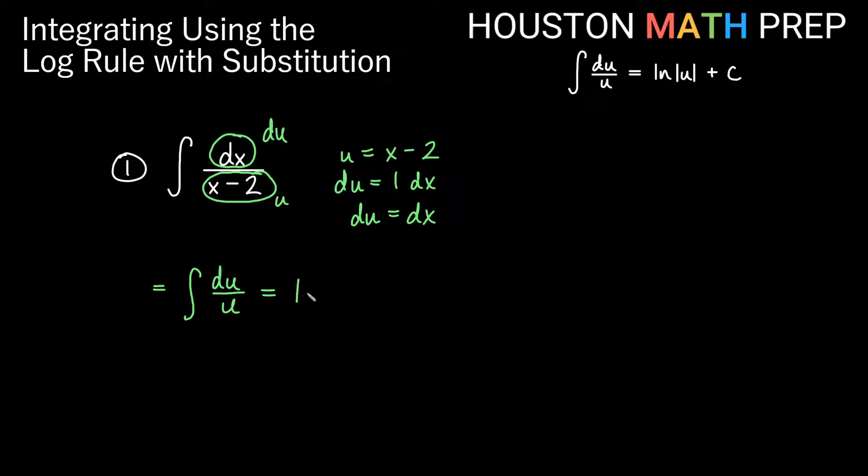This here tells us that that's going to be equal to the ln of the absolute value of u plus c. So we've used our log rule for integrals there. And now we just need to go ahead and replace u in terms of the original problem variable. So we'll go ahead and unsub our u and we'll say ln of the absolute value of x minus 2 plus c for this first one.